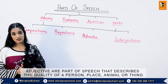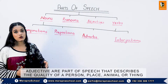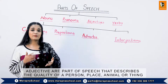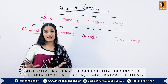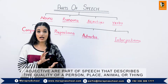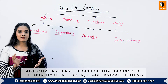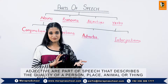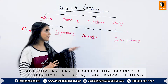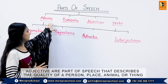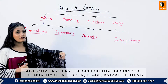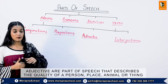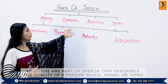Now moving on to adjectives. Adjectives are describing words — they describe nouns. The words that describe a noun like a person, place, animal, or thing. For example, if we talk about Ali and say 'He is a good boy,' the word 'good' would be an adjective.